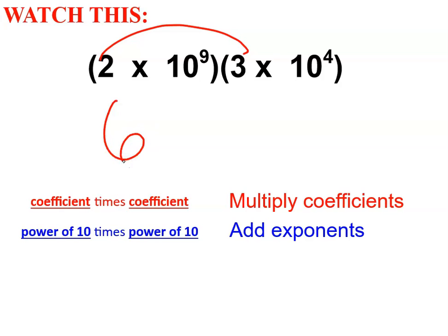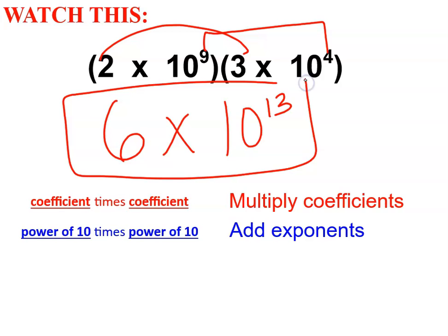So let's get started. 2 times 3 makes 6. Every scientific number has a times sign and a base of 10. And 9 plus 4 makes 13. You're done.